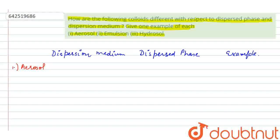In aerosol, the dispersed phase is liquid or solid in a gas. So, dispersion medium in aerosol is gas. An example for this is smoke, fog, etc.